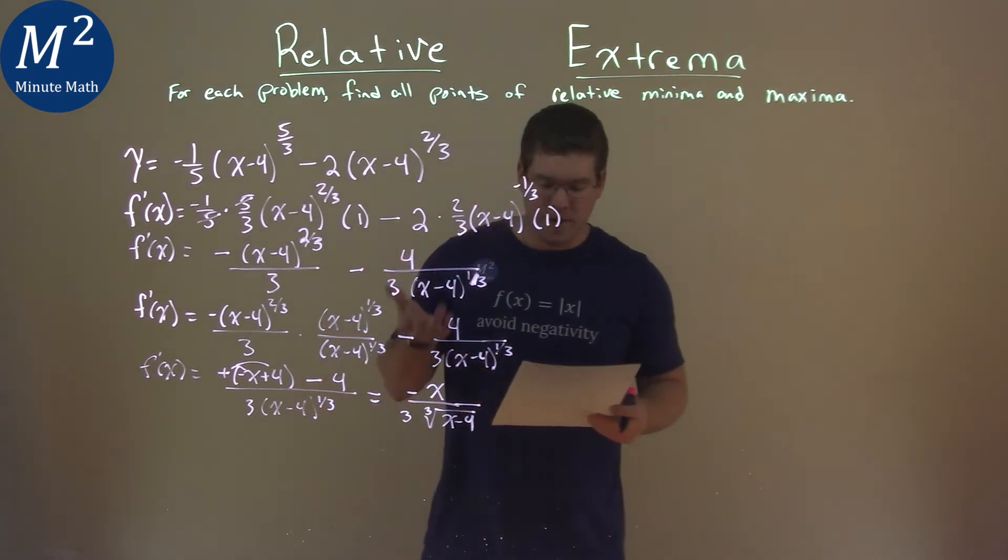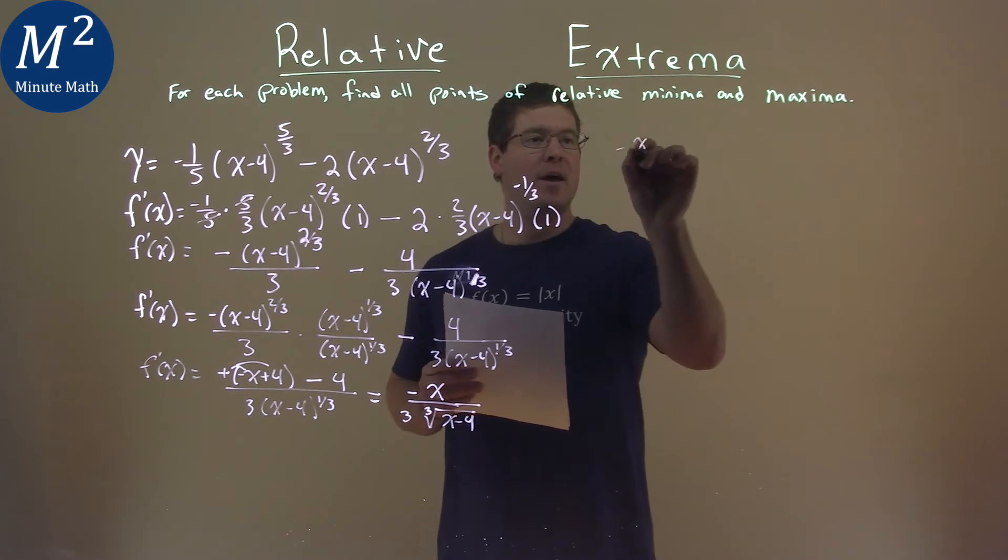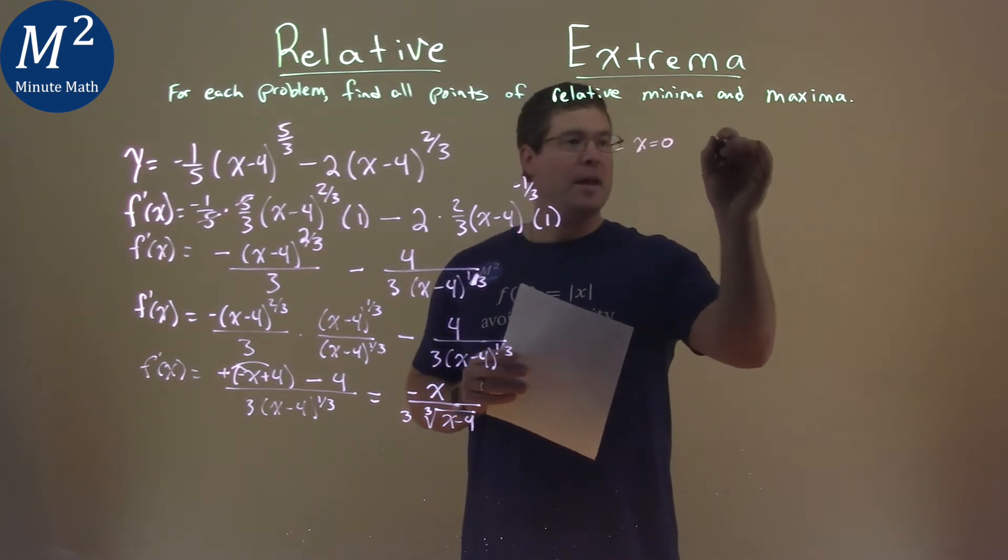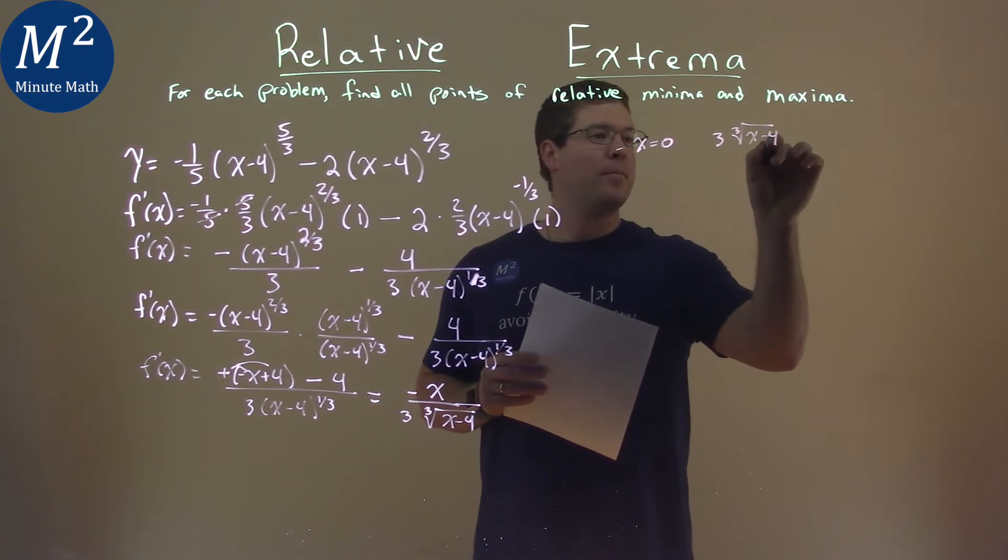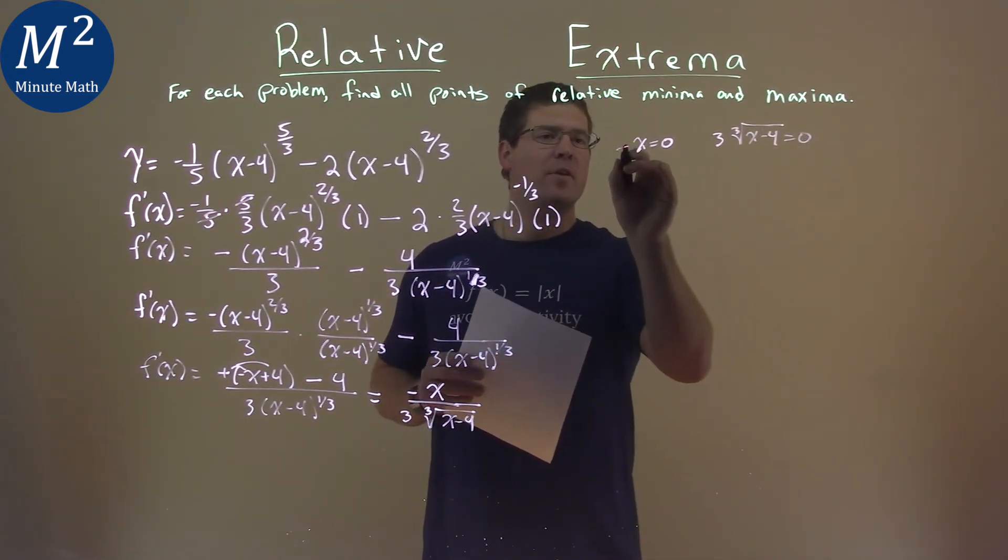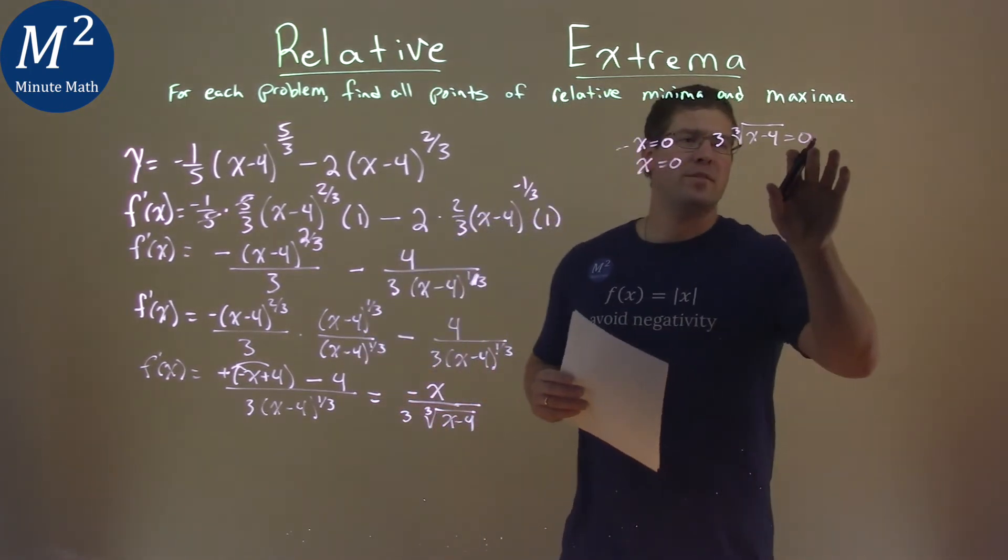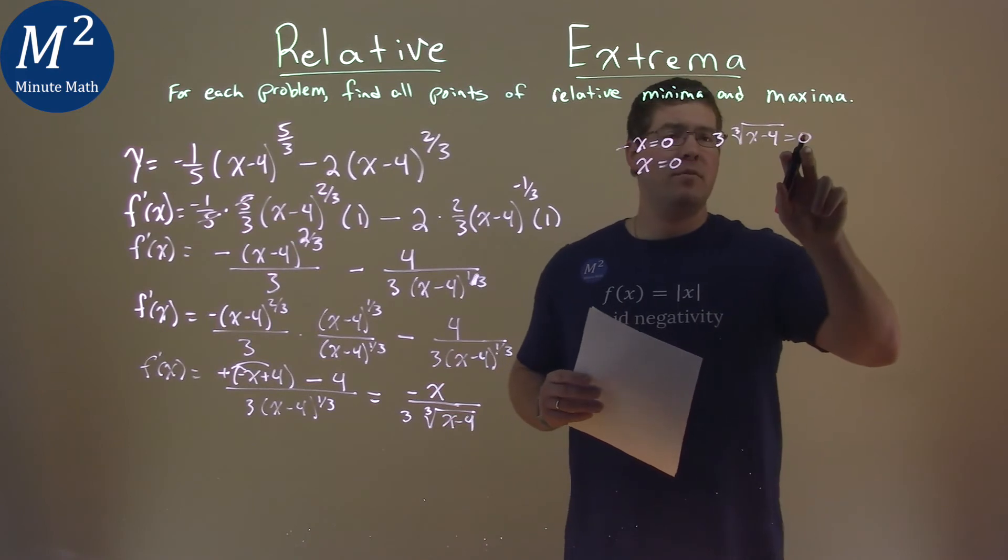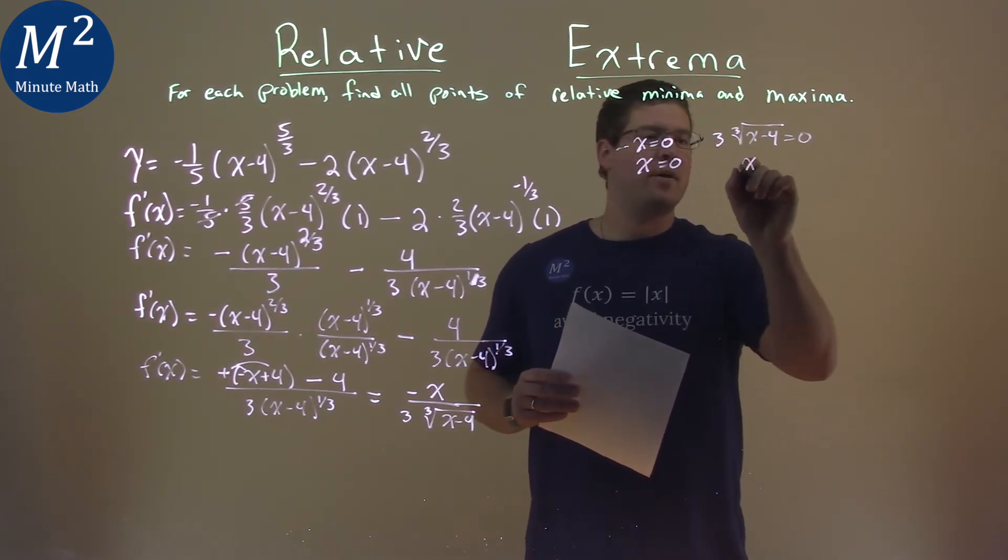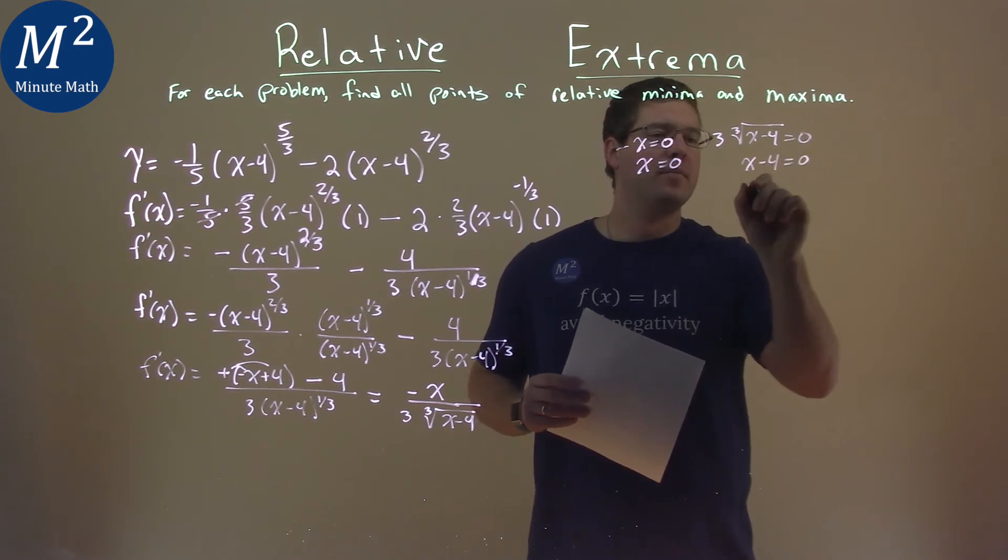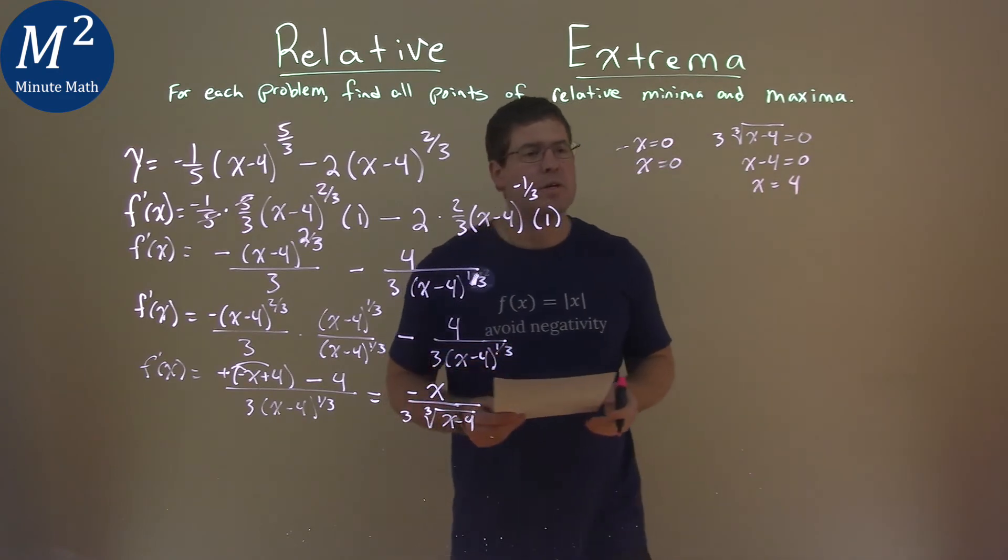So, what we want to do is find our critical points. We're going to set the numerator and denominator equal to zero. So, we have negative x equals zero, and three third root of x minus four equals zero. Divide both sides by negative one, x equals zero. Luckily for us, when it's equal to zero, it becomes pretty easy. Divide both sides by three, we have zero. Third power of both sides is still zero, so we have x minus four equals zero, and x equals positive four there.